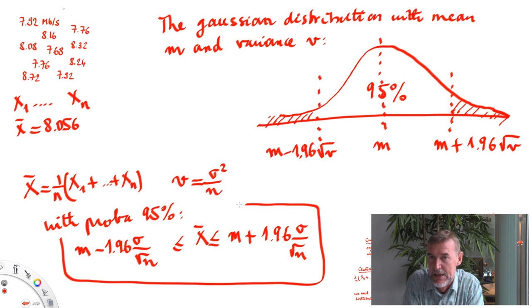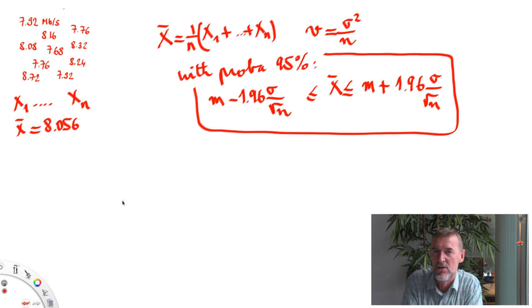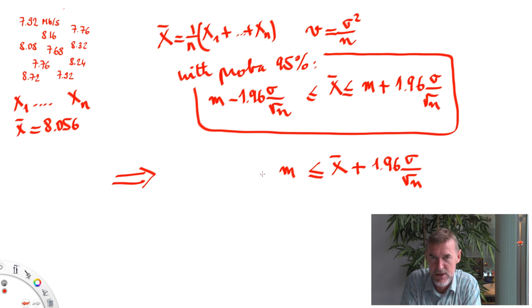We have obtained an interval for x-bar, but that's not what we're interested in. What we want is an interval for m, the parameter of the hidden simulator. But that's easy to obtain by massaging the left equation. We get immediately that m is less than x-bar plus 1.96 sigma over square root of n and similarly on the left. So we're almost done.